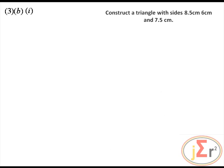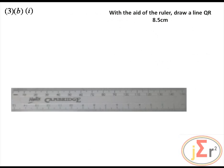Using a pencil, ruler, and pair of compasses only, construct triangle PQR in which QR equals 8.5 cm, PQ equals 6 cm, and PR equals 7.5 cm. This is not very difficult since all three sides are given. With the aid of the ruler, draw a line QR 8.5 cm long.